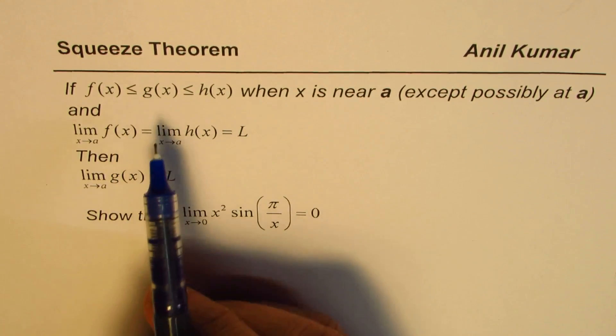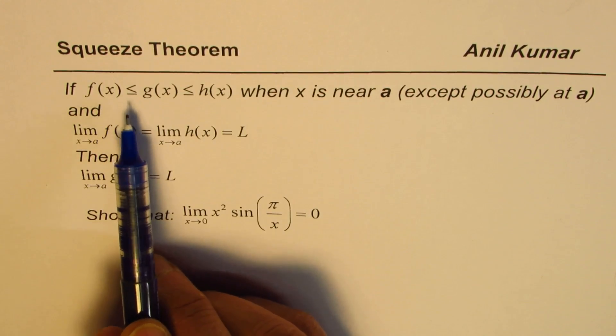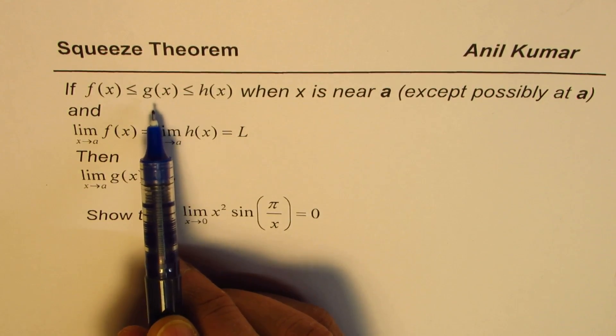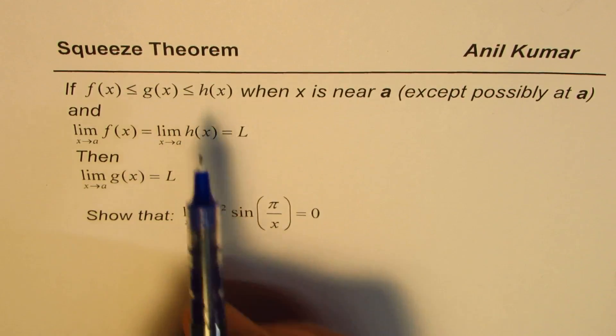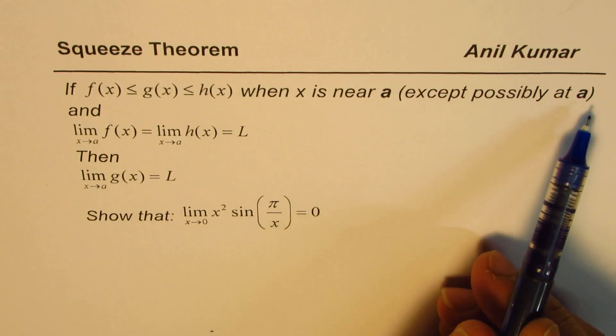So the statement reads something like this. If f(x) ≤ g(x) and g(x) ≤ h(x) when x is near a, except possibly at a,